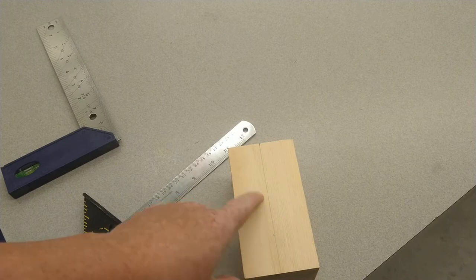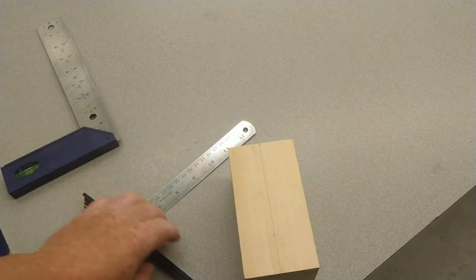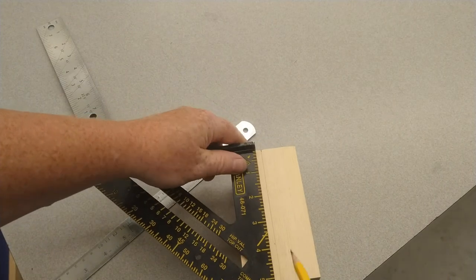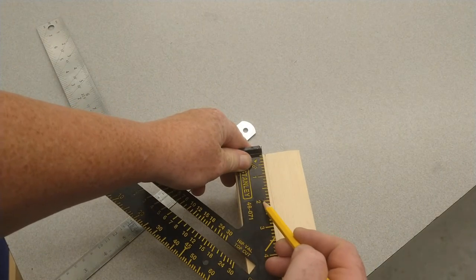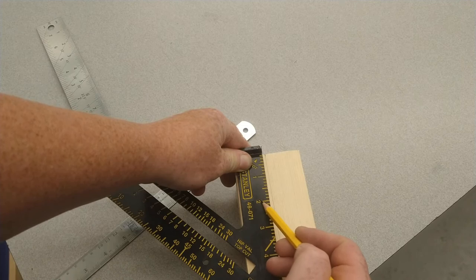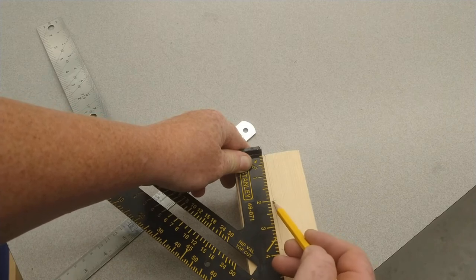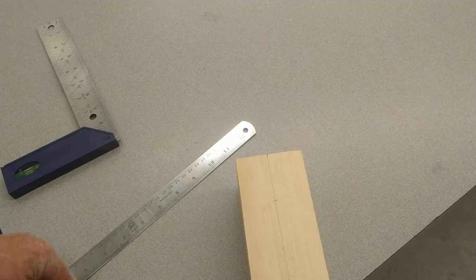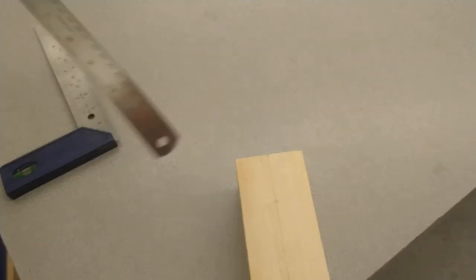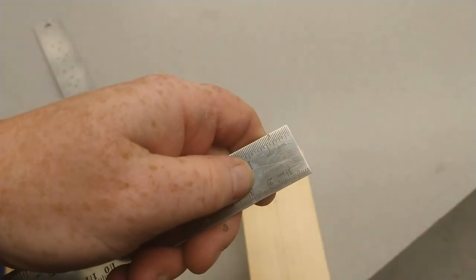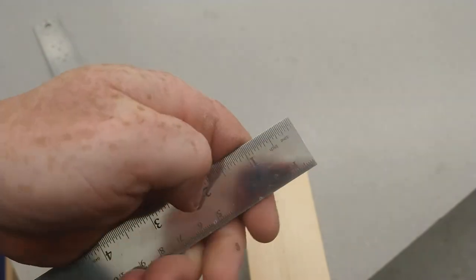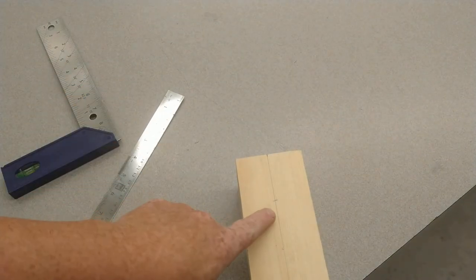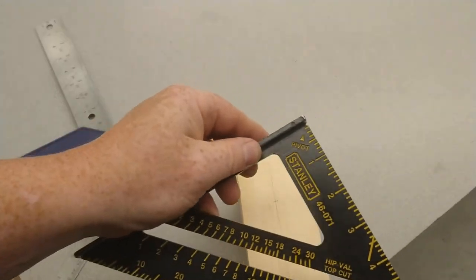I'm going to take a ruler or another measuring device and measure down two inches. One, two. If you measure down two inches and it doesn't look like it's about 40% of the way down the block, you probably measured down two centimeters. You don't want to do that. You want two inches.